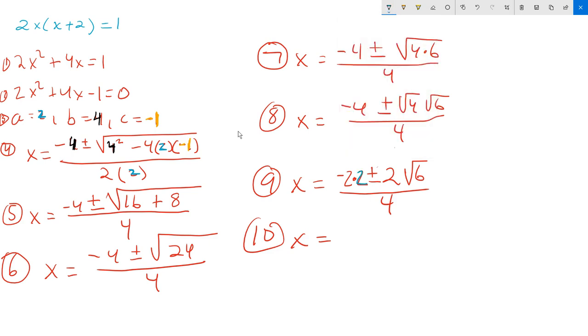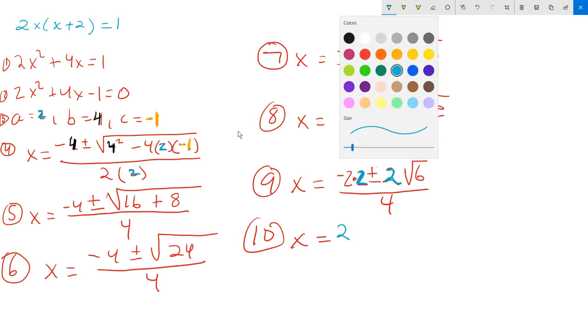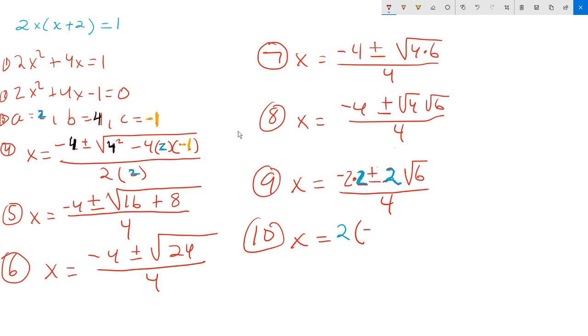That positive 2 I'm writing in blue at step 9, and that 2 right there, they're clearly a common factor. Therefore, you can pull that outside of parentheses. So it goes as 2 on the outside. And what's left over then is -2 ± √6, all of that divided by 4. And now, at step number 10, we want to simplify.